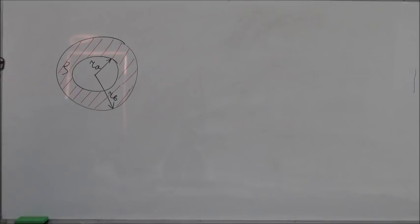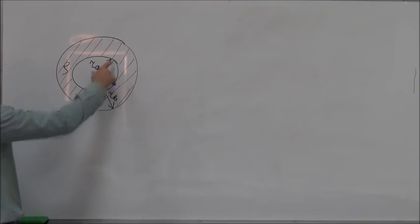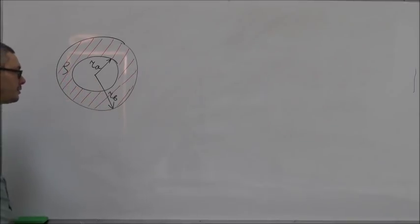In this question, we are given a hollow uniform sphere. The inner radius of the sphere is RA, the outer radius is RB, and the sphere is made of a material whose resistivity is rho.